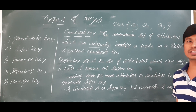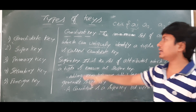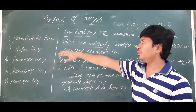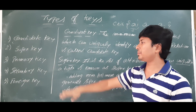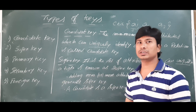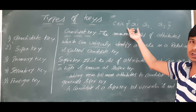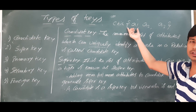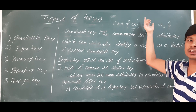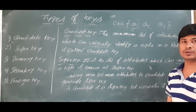Among the set of candidate keys, one acts as the primary key, and the remaining candidate keys — A2 and A3 in this case — are called alternative keys or secondary keys. So among all candidate keys, one becomes the primary key and the rest are secondary or alternative keys.